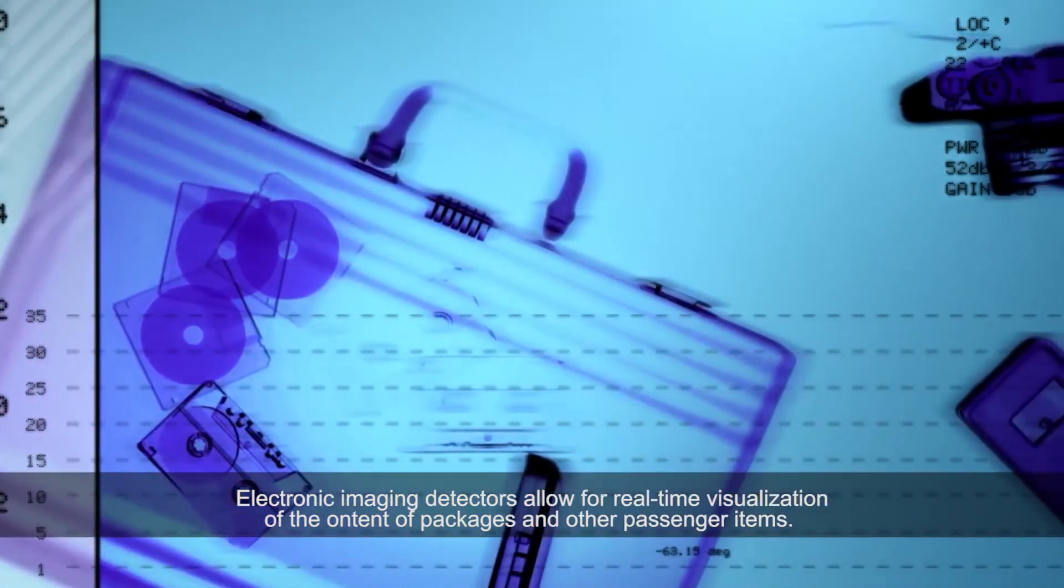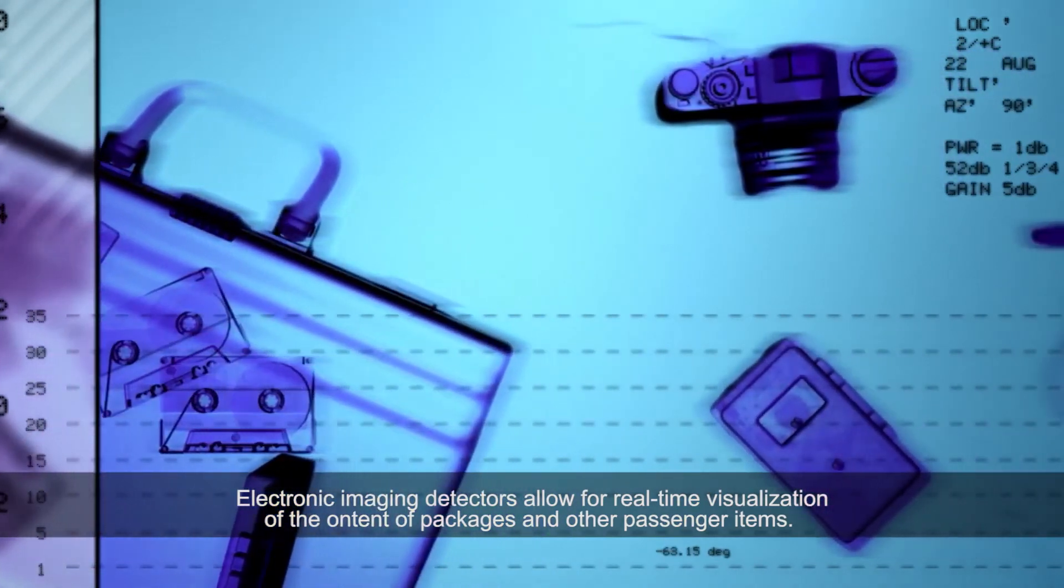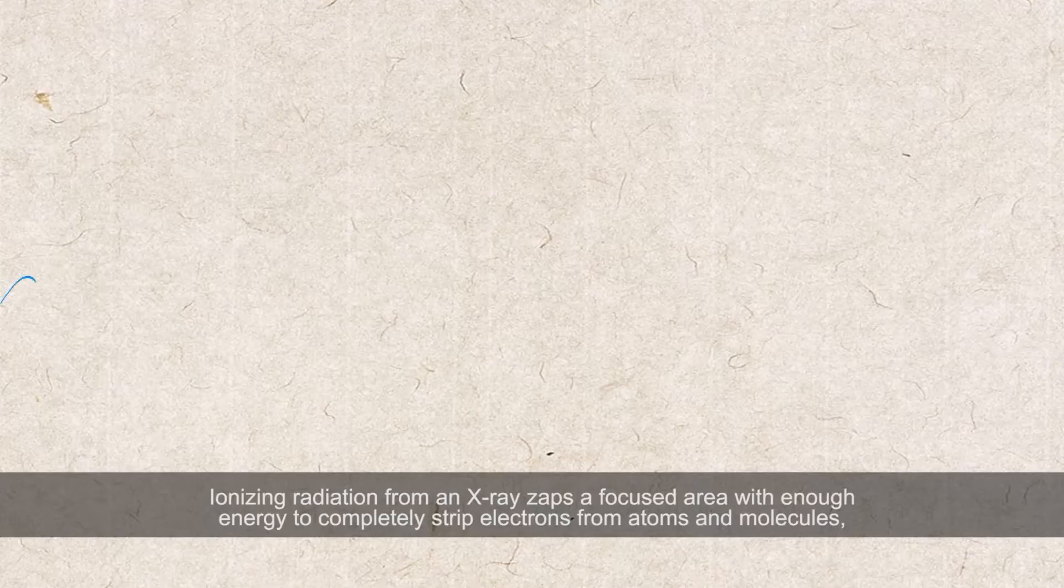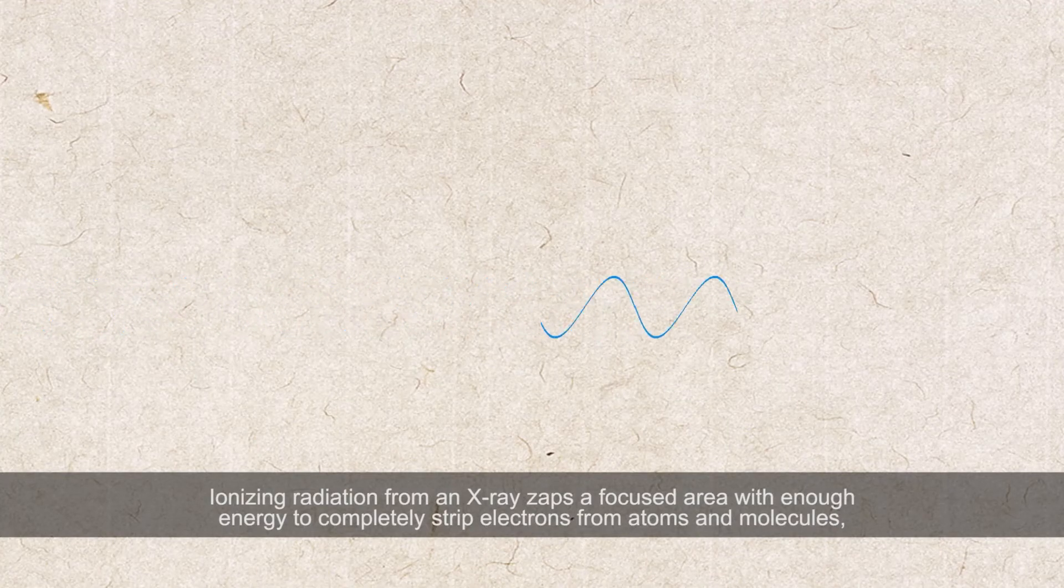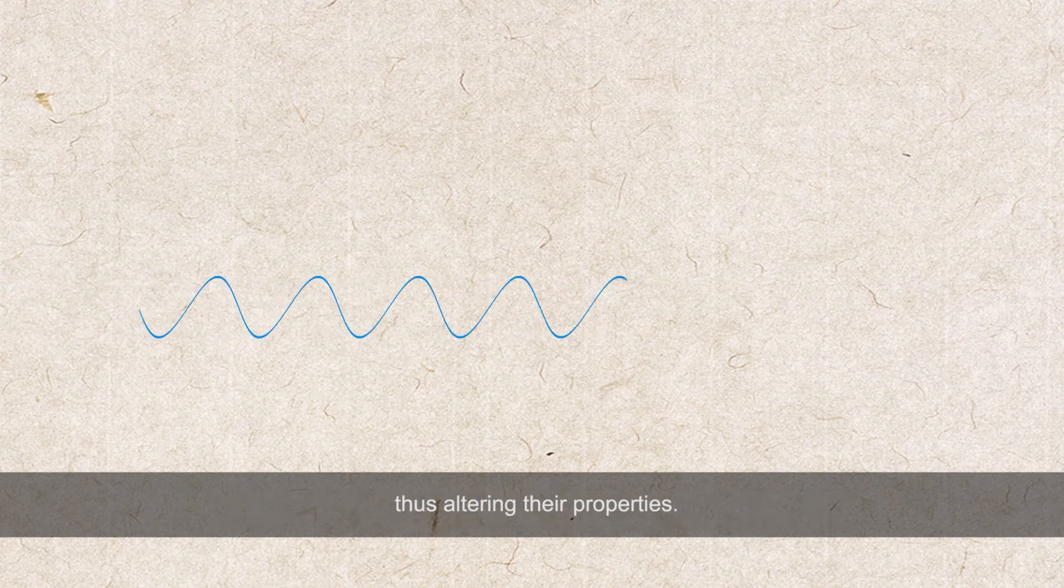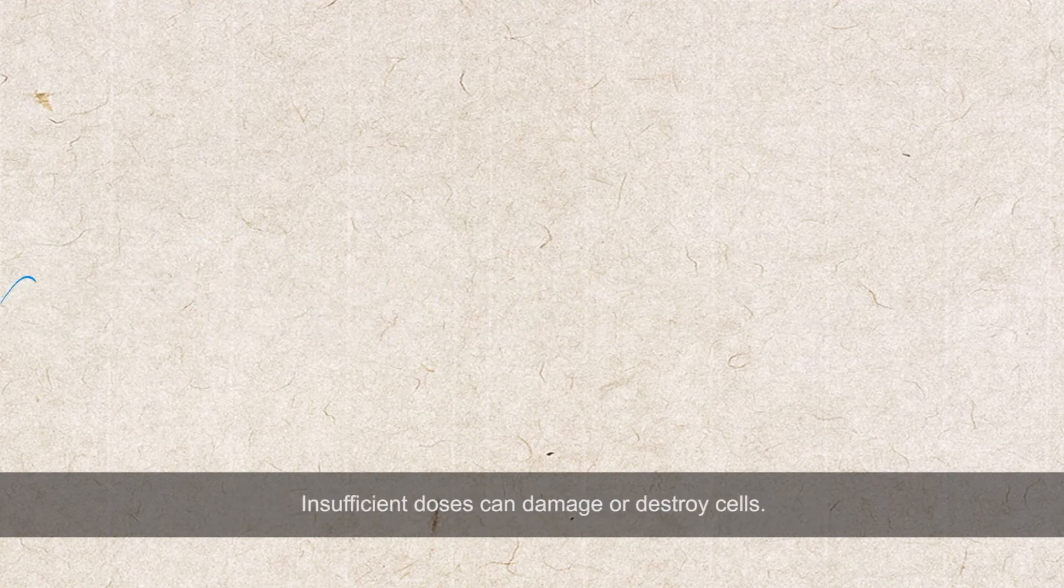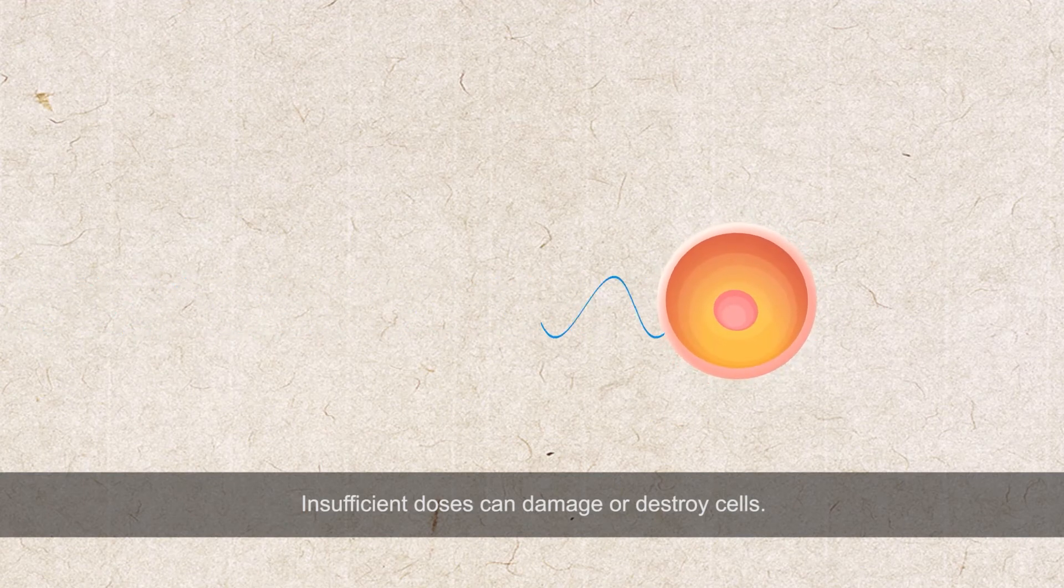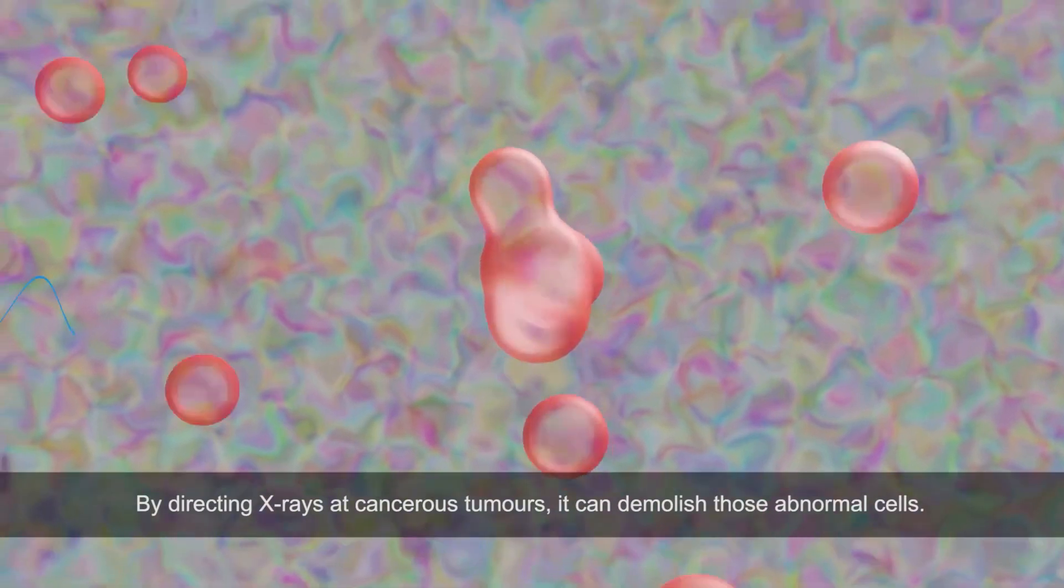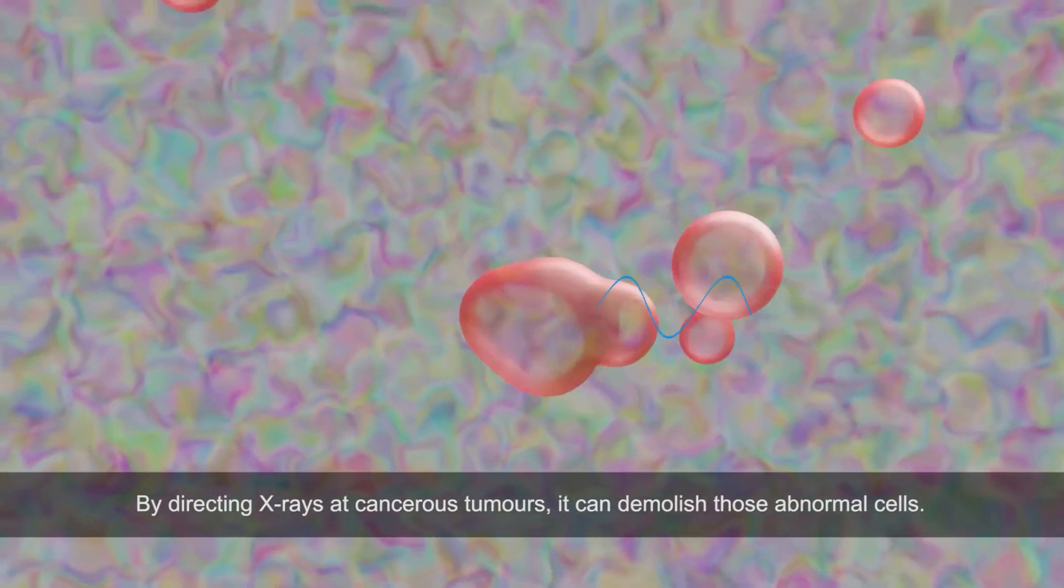Electronic imaging detectors allow for real-time visualization of the content of packages and other passenger items. Ionizing radiation from an X-ray zaps a focused area with enough energy to completely strip electrons from atoms and molecules, thus altering their properties. In sufficient doses, it can damage or destroy cells. By directing X-rays at cancerous tumors, it can demolish those abnormal cells.